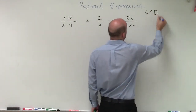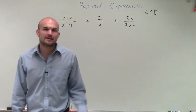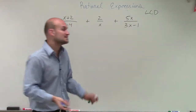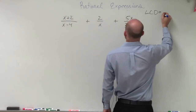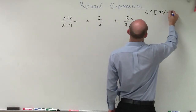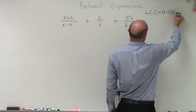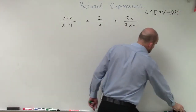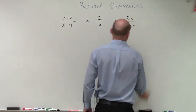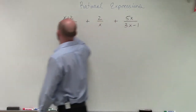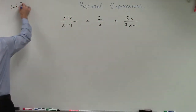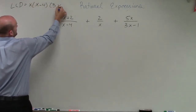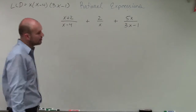It's very important when finding the least common denominator that we first simplify our expressions. You can see that each one of these rational expressions is already simplified. So my LCD is going to equal x times (x minus 4) times (3x minus 1).